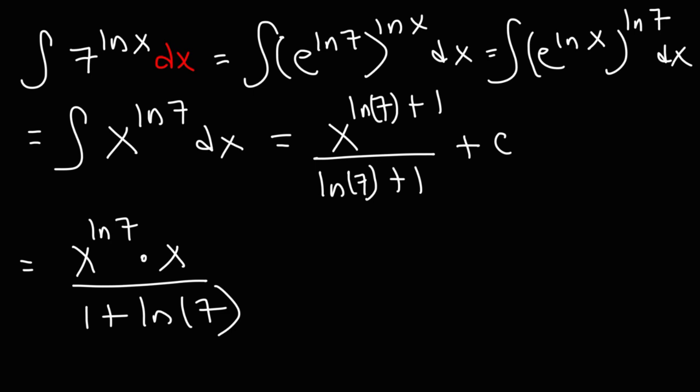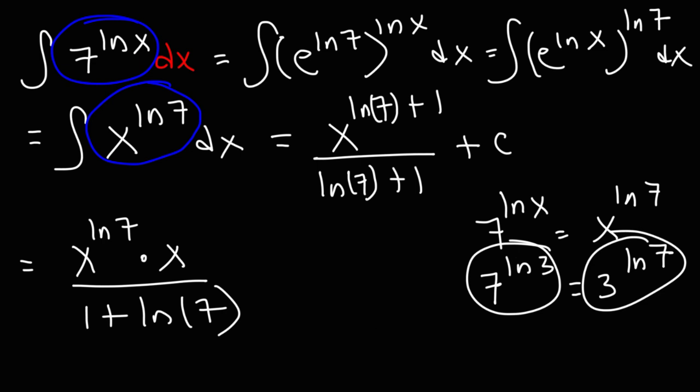Now, notice that x raised to the ln 7 is equivalent to 7 raised to the ln x. And you could test this out. If you plug in, let's say, 3 for x, 7 raised to the ln 3 is equal to 3 raised to the ln 7. You could type this in your calculator. These two will have the same decimal value.